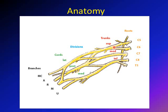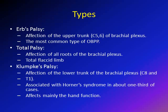This area — the upper trunk of the brachial plexus, where the two roots form the upper trunk and give rise to two divisions — is called Erb's point. This is where Erb's palsy happens. Patients with Erb's palsy have an injury to the upper trunk of the brachial plexus.